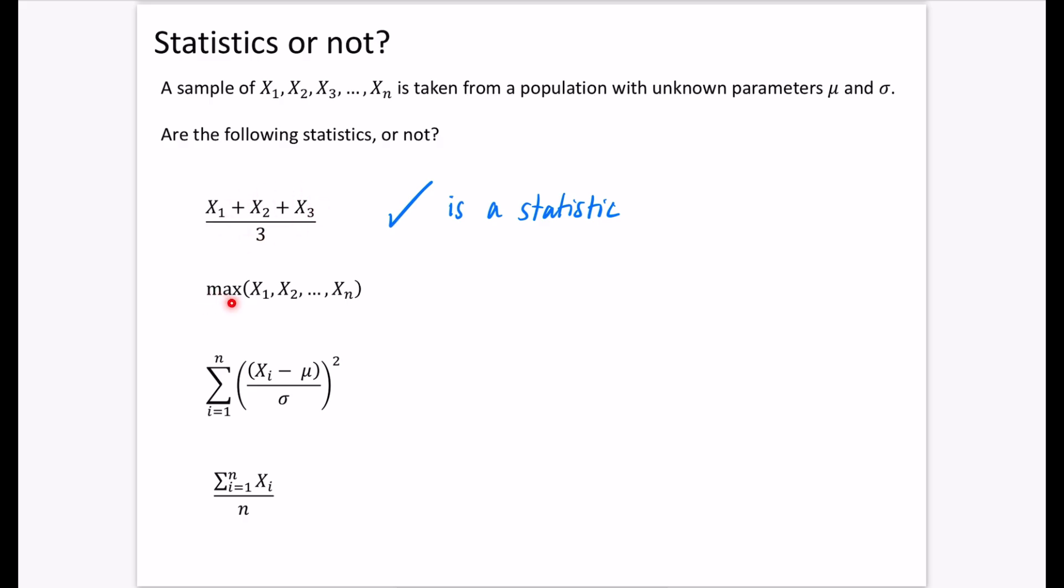This next one subtracts the mean and divides by the standard deviation and it's squared. But look, we've got population parameters μ and σ in here. Because of these population parameters, this is not a statistic. Remember, statistics need to not have any population parameters associated with them.